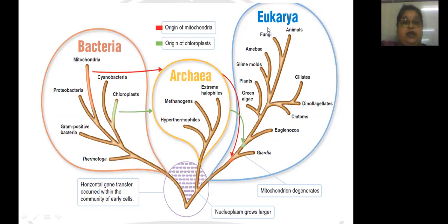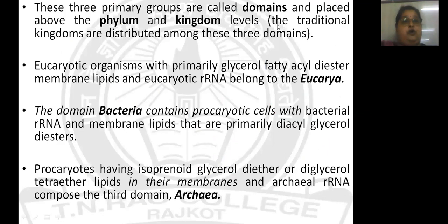Generally people assume that because bacteria and archaea are both prokaryotic they diverged from each other, but actually eukaryotes and archaea share many relationships. It has been found that in early time archaea diverged first, and then the eukaryotes evolved. In this universal phylogenetic tree there are three main domains — bacteria, archaea, and eukaryotes — and bacteria and archaea through symbiotic relationships converted into mitochondria and chloroplasts, contributing to eukaryotic evolution.